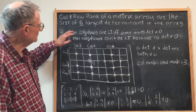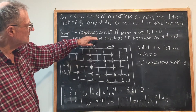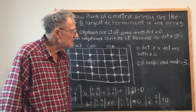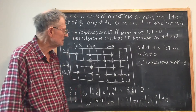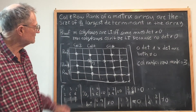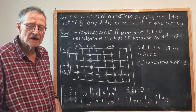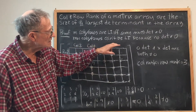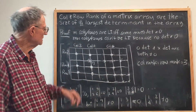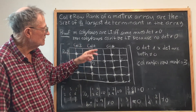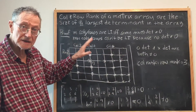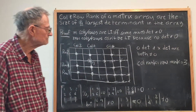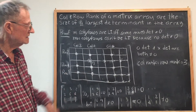The proof is that m columns or rows are linearly independent if and only if some m by m determinant in the column or row is unequal to zero. Also, since m was the largest size that was unequal to zero, m plus one columns or rows cannot be linearly independent because no m plus one by m plus one determinant in those rows or columns is unequal to zero.